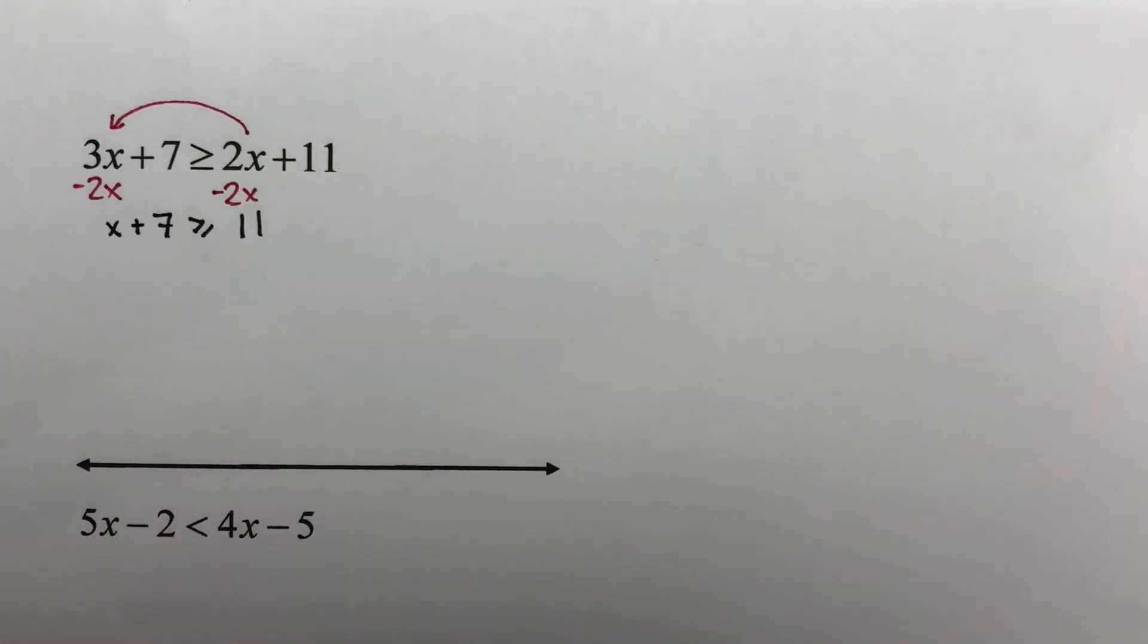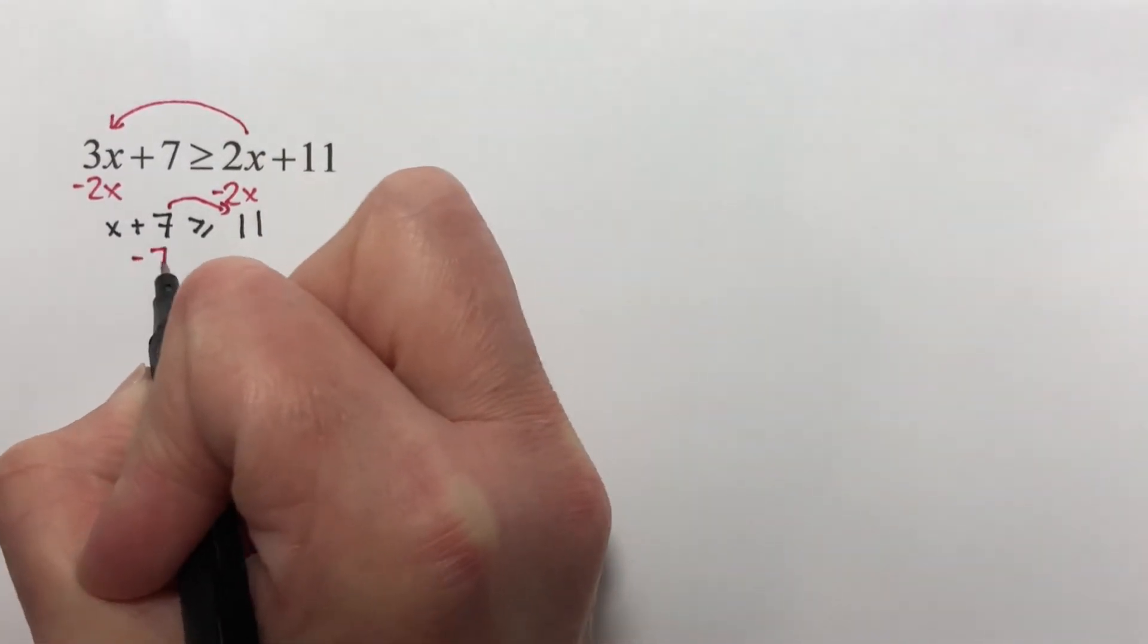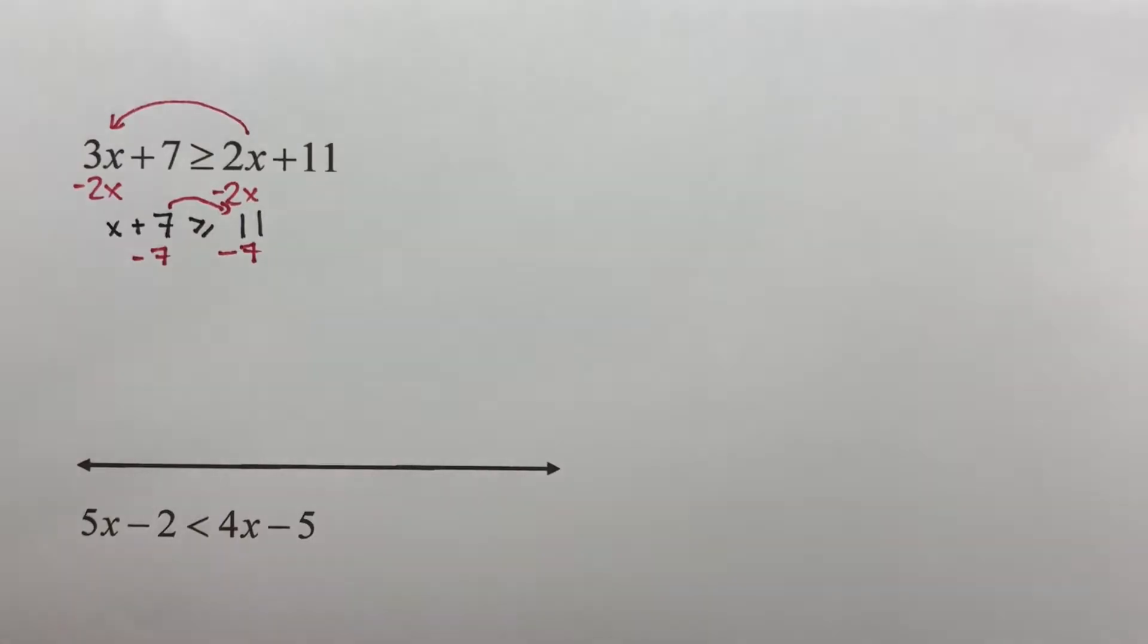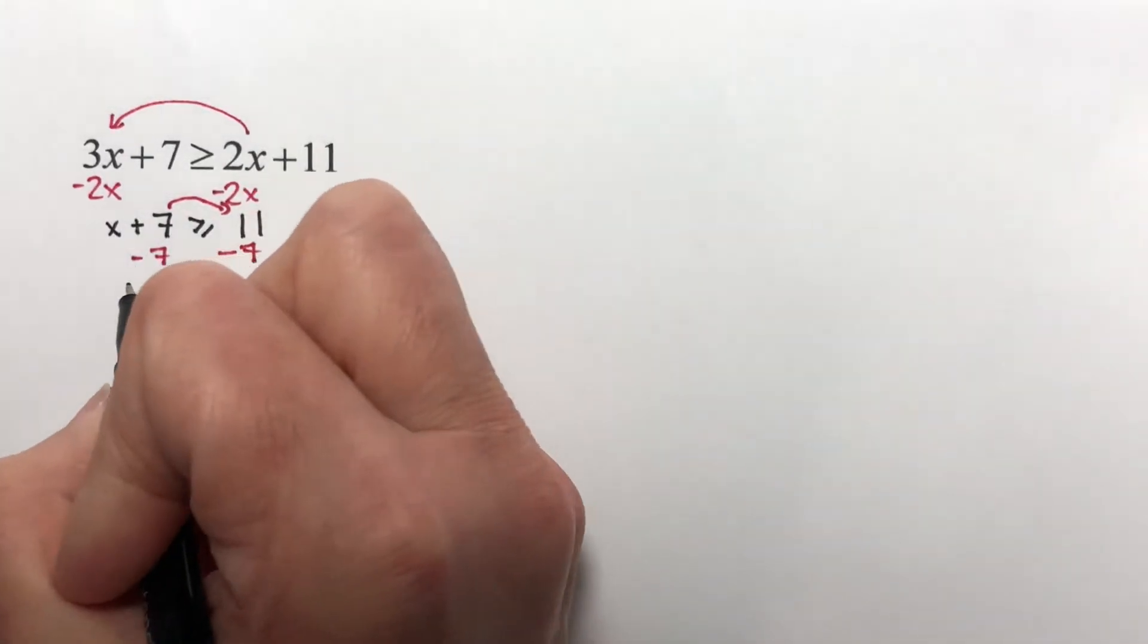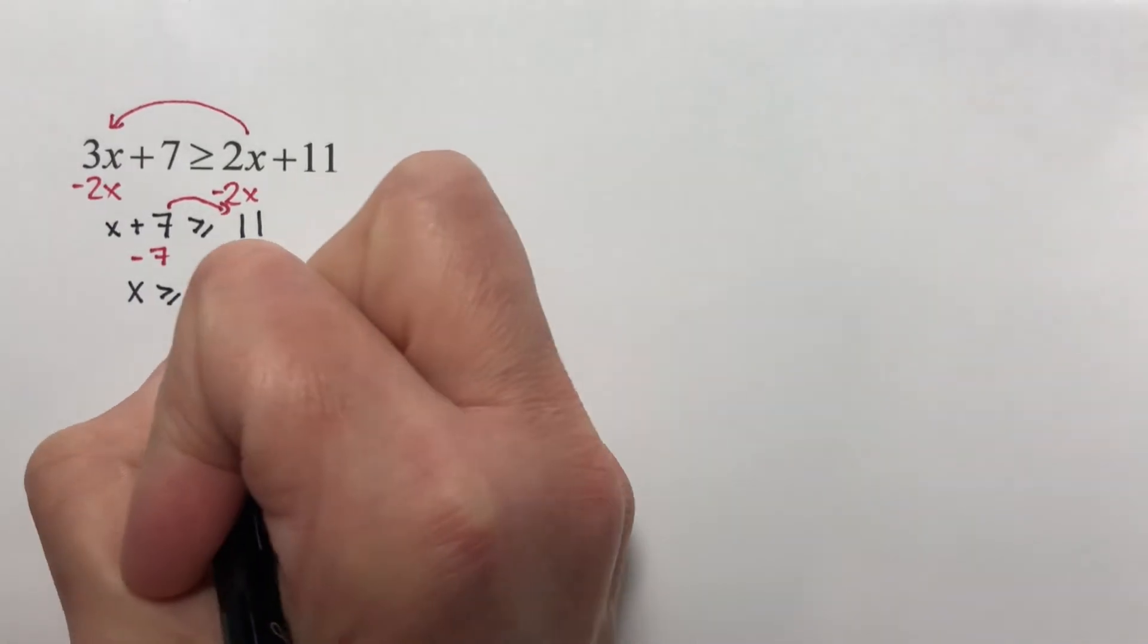Now I need to move this over to here, so the x will be alone. So I subtract 7 from both sides, and I get x is greater than or equal to 11 minus 7 is 4.